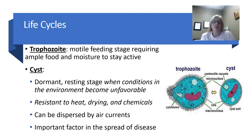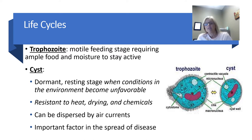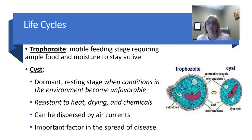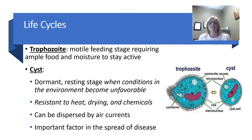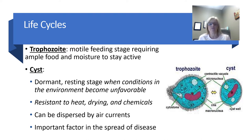Protozoa have a life cycle where they are called a trophozoite when in their motile, active feeding stage — they need a lot of food and moisture to stay active. Many species can enter a dormant resting stage called a cyst, which occurs primarily when there are hostile or unfavorable environmental conditions. It's protective against heat, drying out (desiccation), and harmful chemicals. They can also be dispersed by air currents, which helps spread disease like amoebic dysentery. When there is enough moisture and nutrients, the cyst breaks open and releases the active trophozoite form.